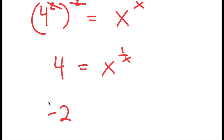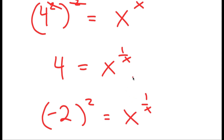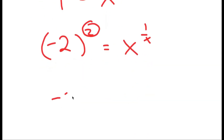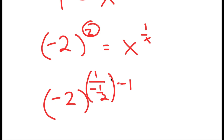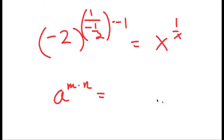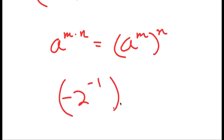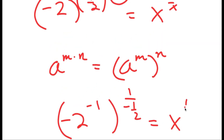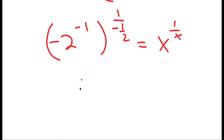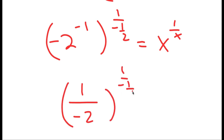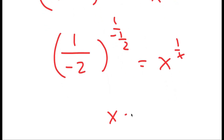Now 4 is the same as negative 2 squared, and the exponent 2 can be rewritten as 1 over negative 1 half times negative 1. Using the property a^(m times n) equals a^m^n, I move the negative 1 to be an exponent of negative 2. So I get negative 2 to the power of negative 1 to the power of 1 over negative 1 half equals x to the power of 1 over x. And negative 2 to the power of negative 1 is 1 over negative 2, so my solution is x equals negative 1 half.